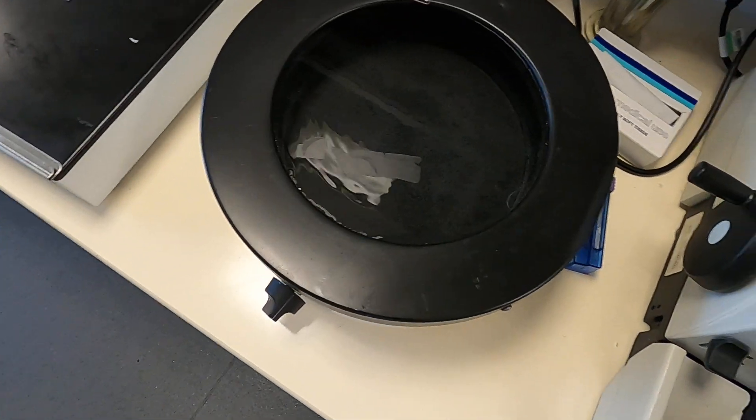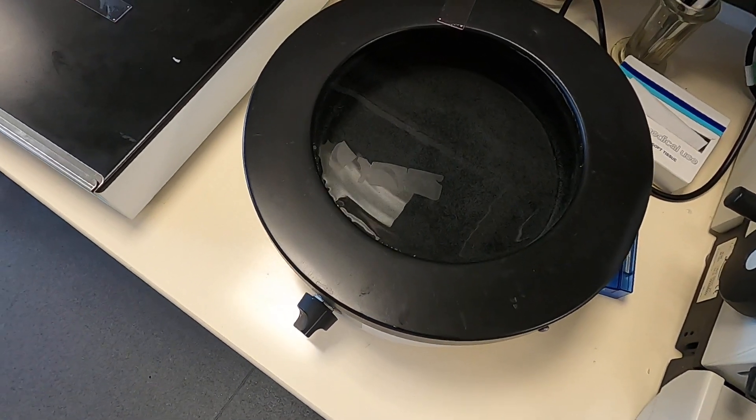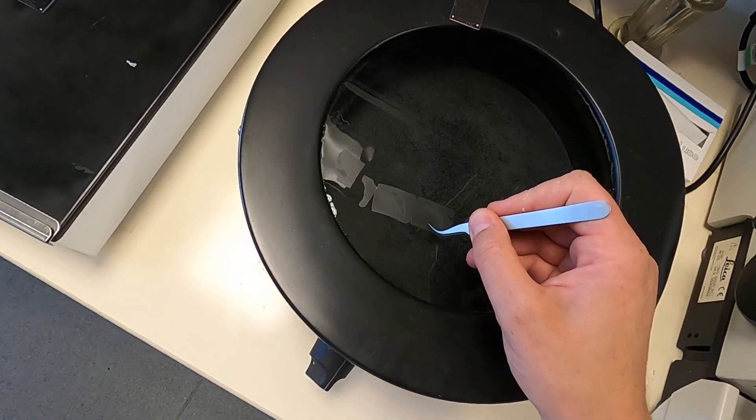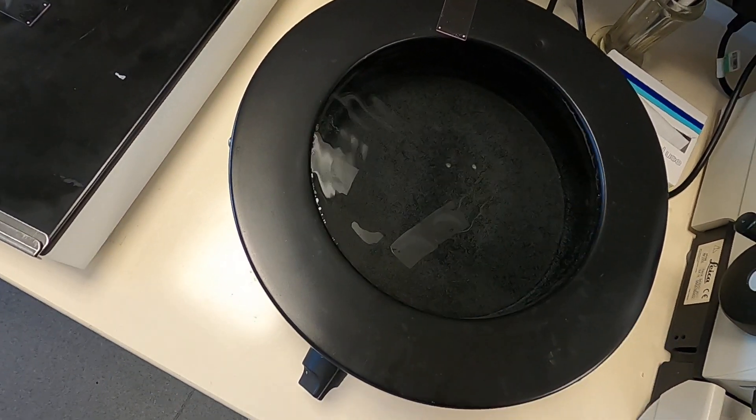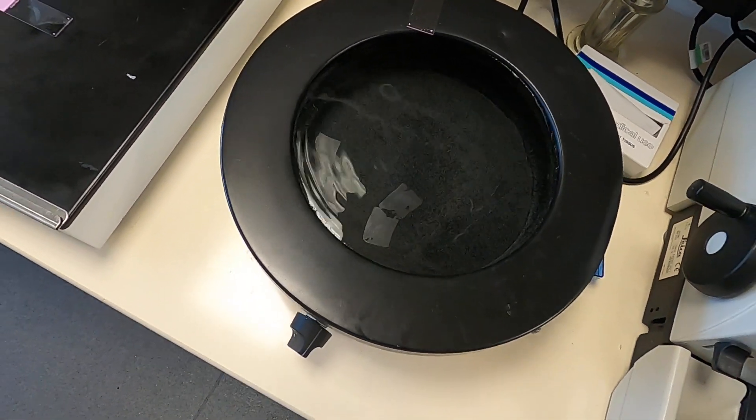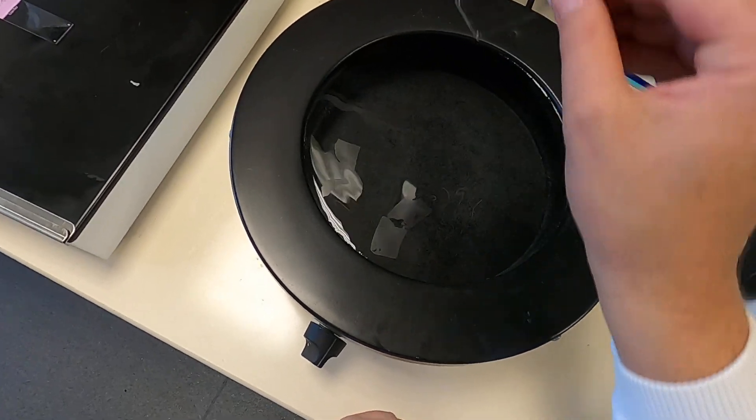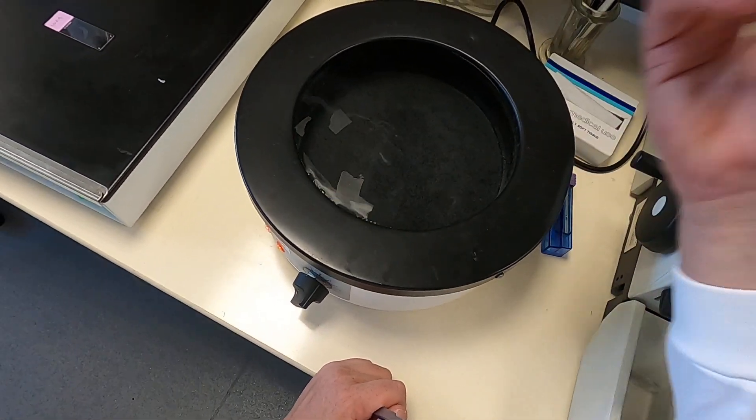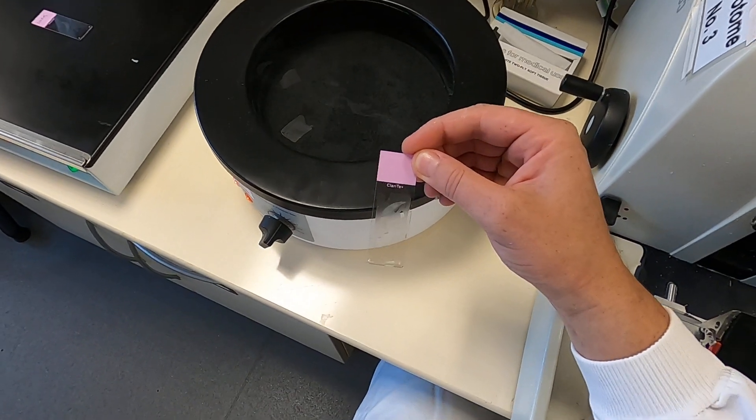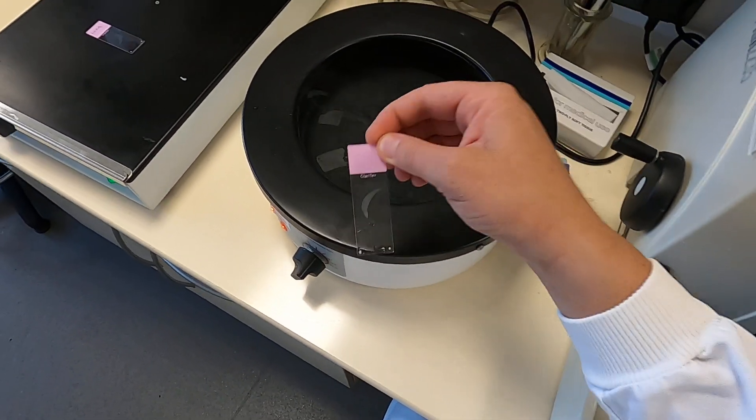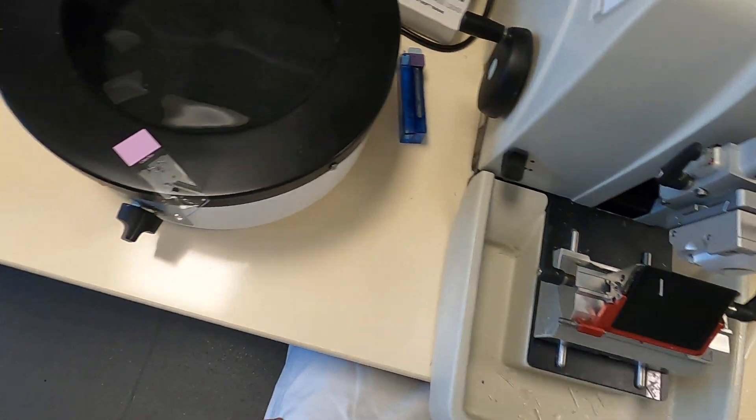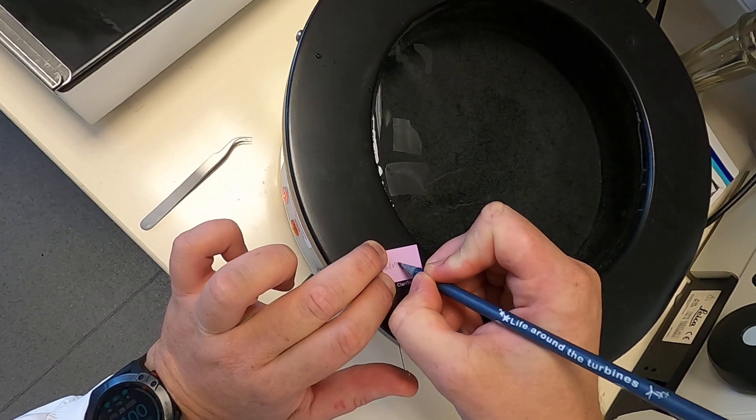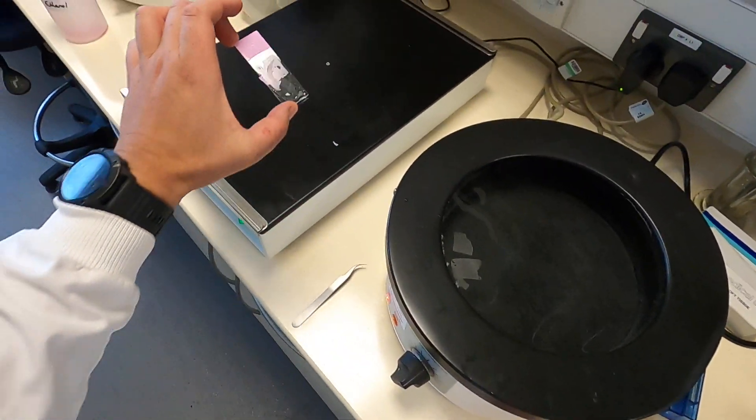You float them out on the water bath. Now, as you can see, there's no air bubbles, no creases. They are completely flat. What I can do then is take a pair of forceps and just chop off the ones I don't want. Grab a slide, pick it up, make sure there's no water, and now I have a piece of tissue on a slide. Label it up.